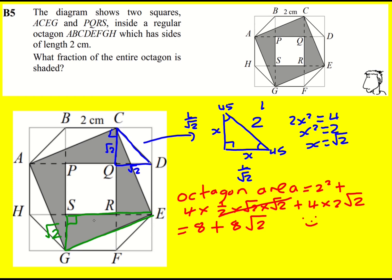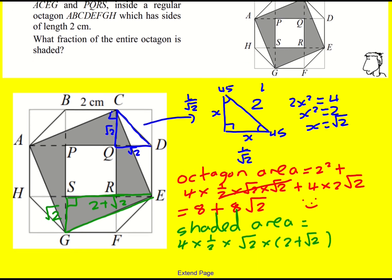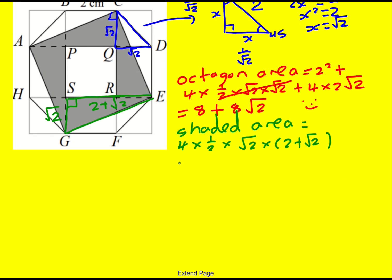This length is root 2. And this length is going to be 2 plus root 2. So the shaded area will equal 4 times 1 half times root 2 times 2 plus root 2. I have base times height, but I've got four of them. So this will become 2 root 2 times 2 plus root 2.